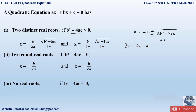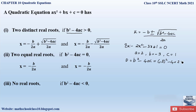Let us take an example: 2x² − 3x + 1 = 0. Comparing with the standard form, a = 2, b = −3, and c = 1. Now let us find the discriminant: b² − 4ac = (−3)² − 4(2)(1) = 9 − 8 = 1. Since the discriminant equals 1, which is greater than 0, we will obtain two distinct real roots.